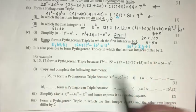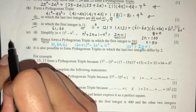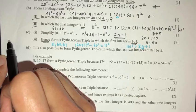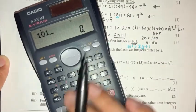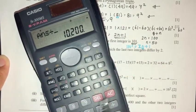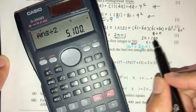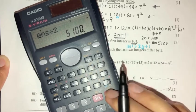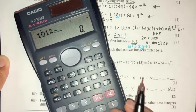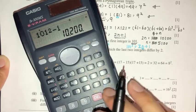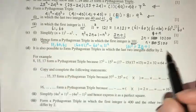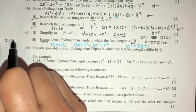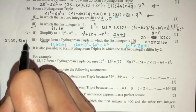So the Pythagorean triple is: first integer 101, then n equals 5100, and n plus 1 equals 5101. That is the triple we need to write: 101, 5100, 5101.